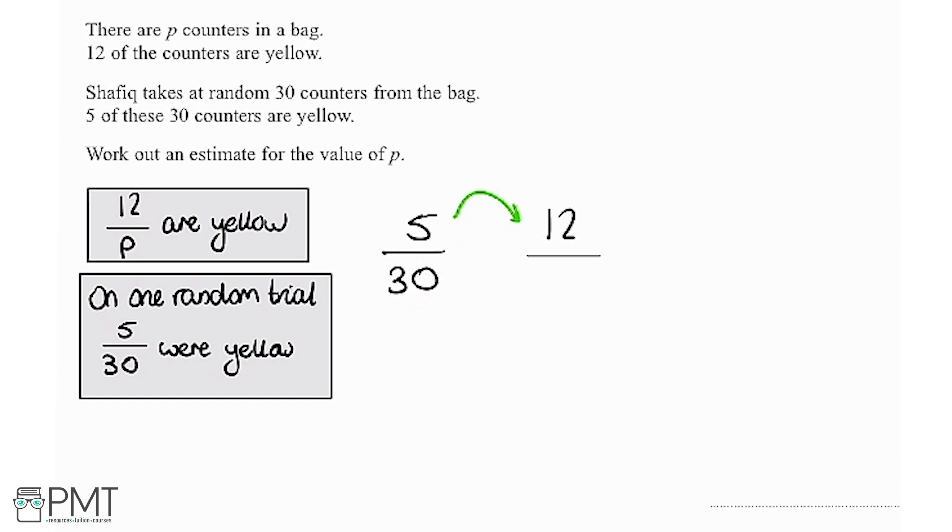So how do we get from the 5 to the 12? If we do 5 multiplied by 12 over 5 that will get us to 12. Anything we do to the numerator we need to do to the denominator. So we're going to multiply by 12 over 5.